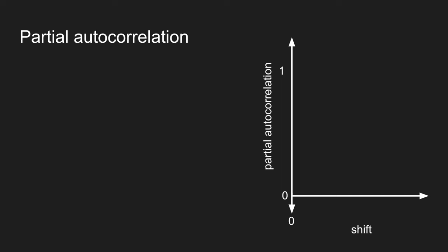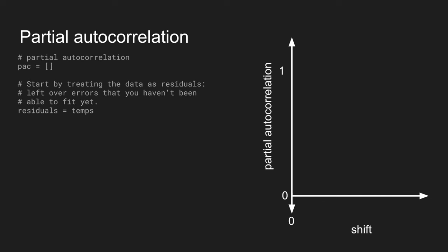There's also a very useful term called partial autocorrelation. And what that is, is we start again with our temperatures, and we think of them now as being errors, residuals that we haven't been able to fit yet.